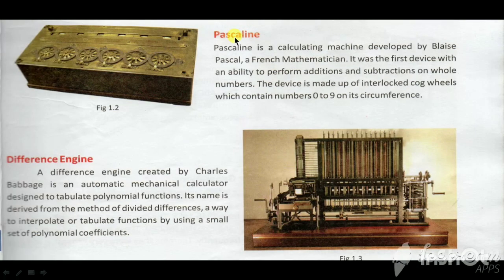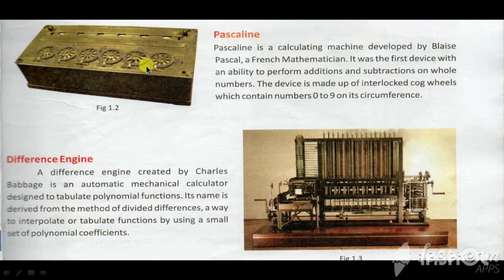Next is the Pascaline. Pascaline is a calculating machine developed by Blaise Pascal, a French mathematician. It was the first device with the ability to perform addition and subtraction. यानि कि यह Abacus से advanced machine थी, जो addition और subtraction को कर सकती थी on whole numbers.